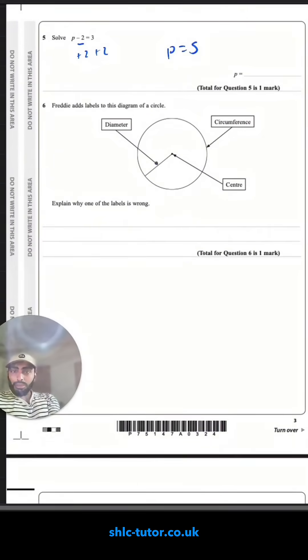Explain why one of these labels are wrong. So that one is correct, it's a circumference, it's the perimeter on the edge of the circle. That is the center. That one is incorrect. The diameter should be labeled as the radius. The diameter goes from one edge of the circle to the other edge through the center. The radius just goes halfway.